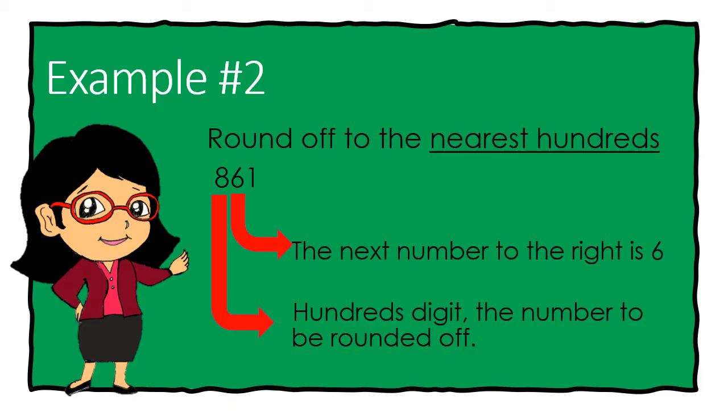Since 6 is more than 5, then 861 rounded off to the nearest hundreds is 900. We add 1 to number 8 since 6 is more than 5, then turns all the numbers to the right into zeros.